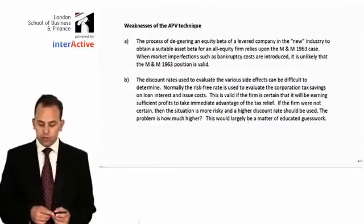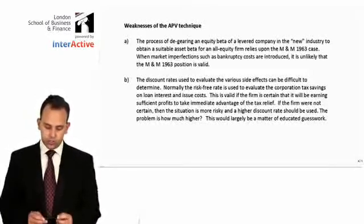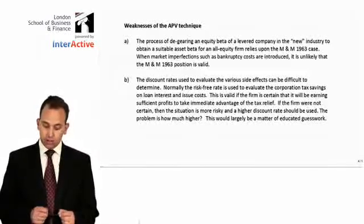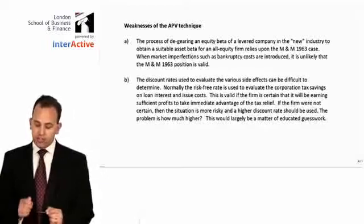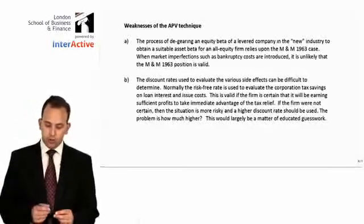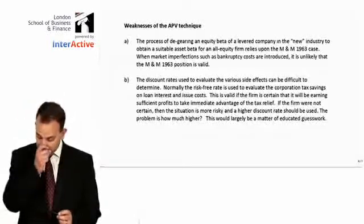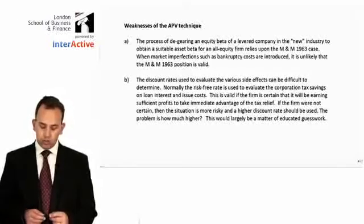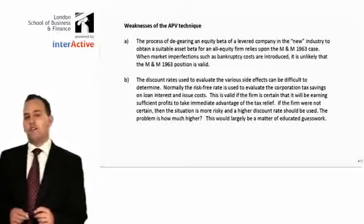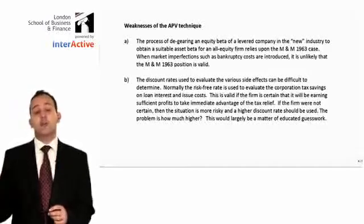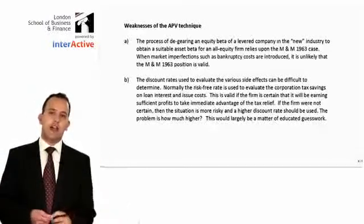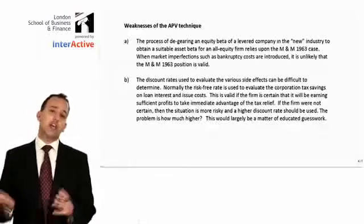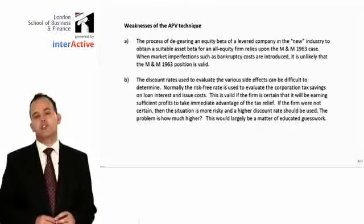Secondly, the discount rates used to evaluate the various side effects can be difficult to determine. Normally the risk-free rate is used to evaluate the corporation tax savings on loan interest and issue costs. This is valid if the firm is certain it will earn sufficient profits to take immediate advantage of the tax relief. If the firm is not certain, the situation is more risky and a higher discount rate should be used — but the problem is: how much higher? We assumed in this question that debt was risk-free, but if there is a chance we cannot make interest payments, that debt is no longer risk-free and a different discount rate is needed.